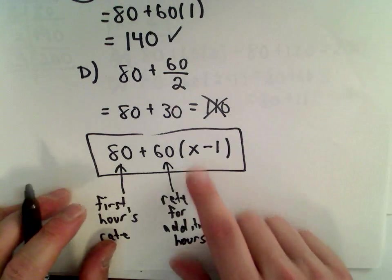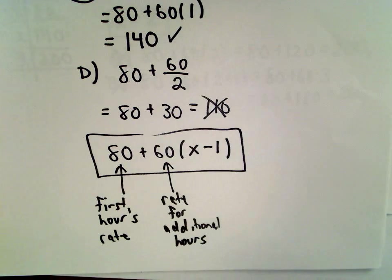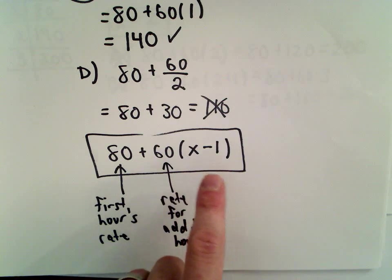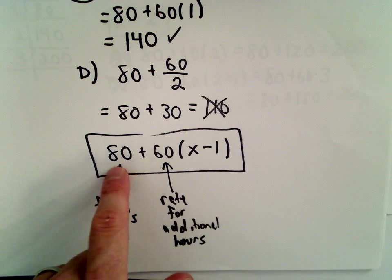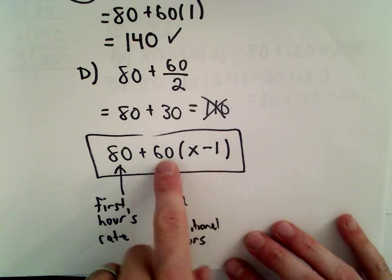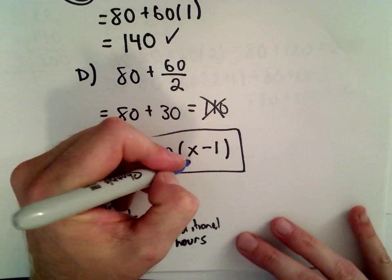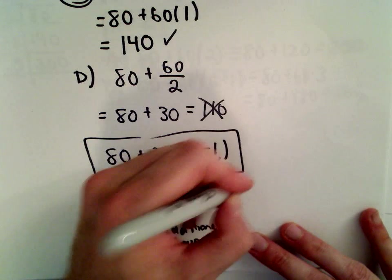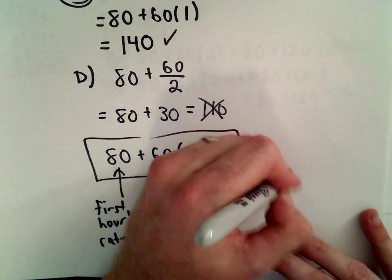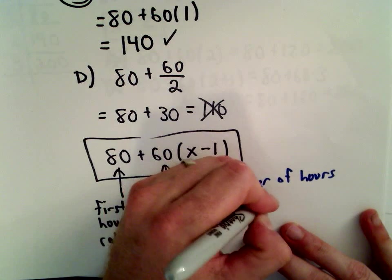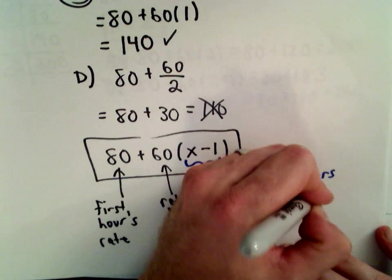And the idea is, if the plumber's working x hours total, the plumber's not charging you 60 dollars for each of those x hours. He's charging you 80 for the first one. And then, so you've got one hour left at the rate of 60 dollars. So the x minus 1 is basically telling you the number of hours worked after the first hour.